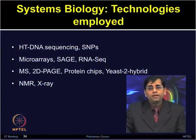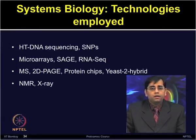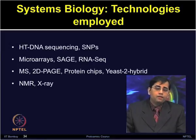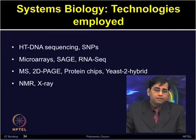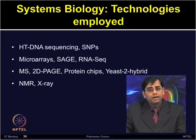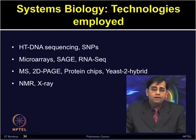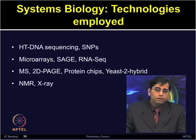Some of the technologies commonly employed in systems biology can be classified broadly under the following techniques. For genomics: high throughput DNA sequencing methodologies and mutation detection using SNP methods. For transcriptomics: transcript measurement can include serial analysis of gene expression (SAGE), gene chips, microarrays, and RNA sequencing.